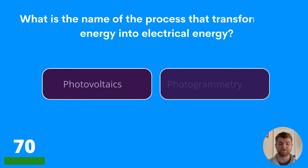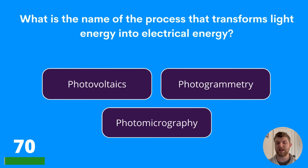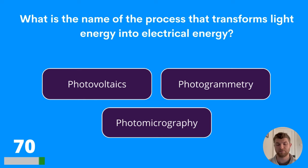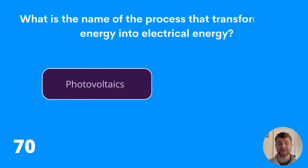Question seventy: what is the name of the process that transforms light energy into electrical energy? Photovoltaics, photogrammetry, or photomicrography? The answer is photovoltaics.